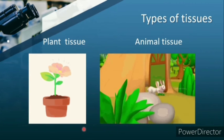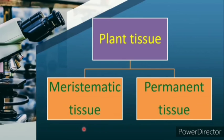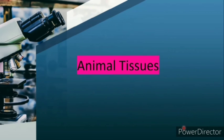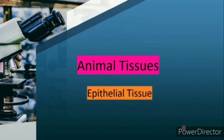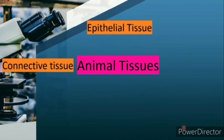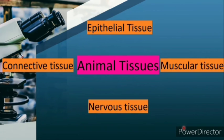Hence we have two types of tissues: plant tissue and animal tissue. Plant tissues are further classified into meristematic and permanent tissues. Animal tissues include epithelial tissue, connective tissue, muscular tissue, and nervous tissue. You will learn about each type of tissue in your future classes.